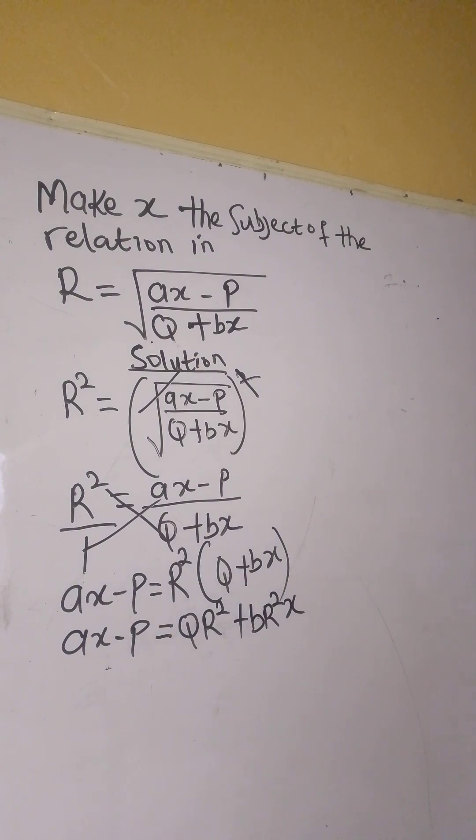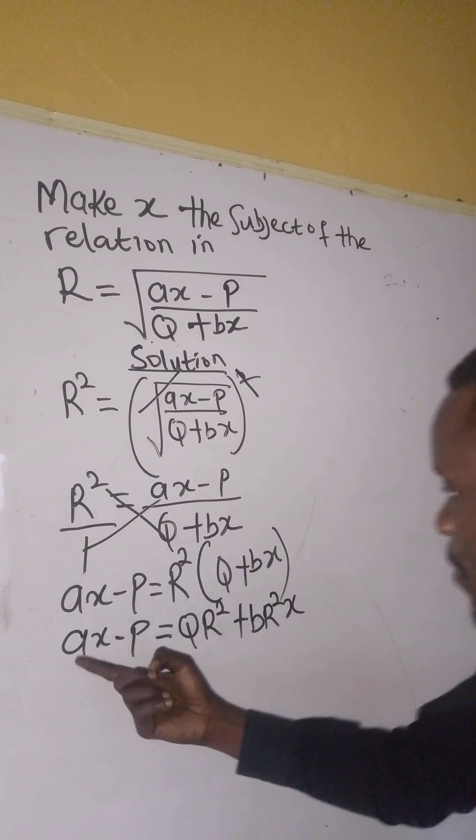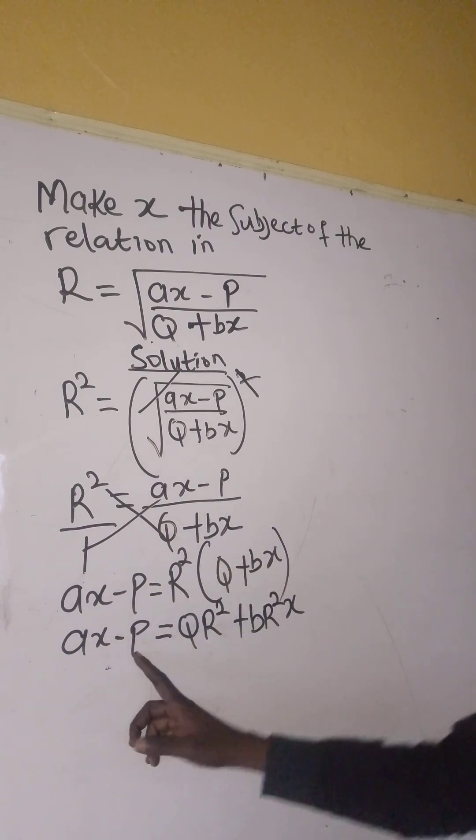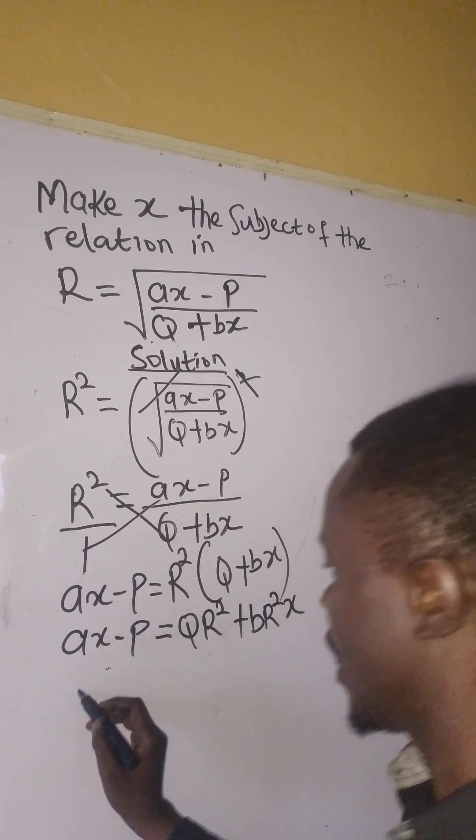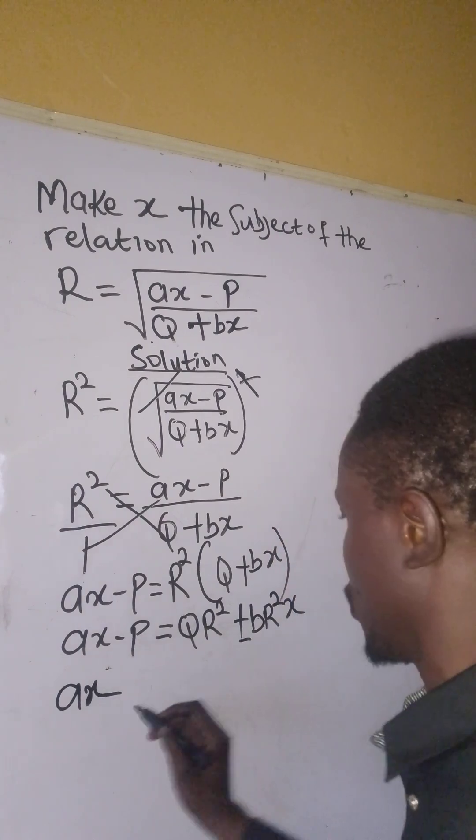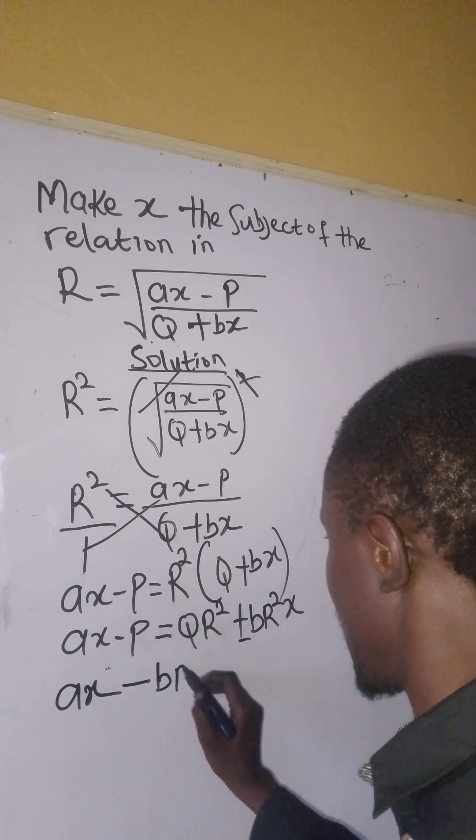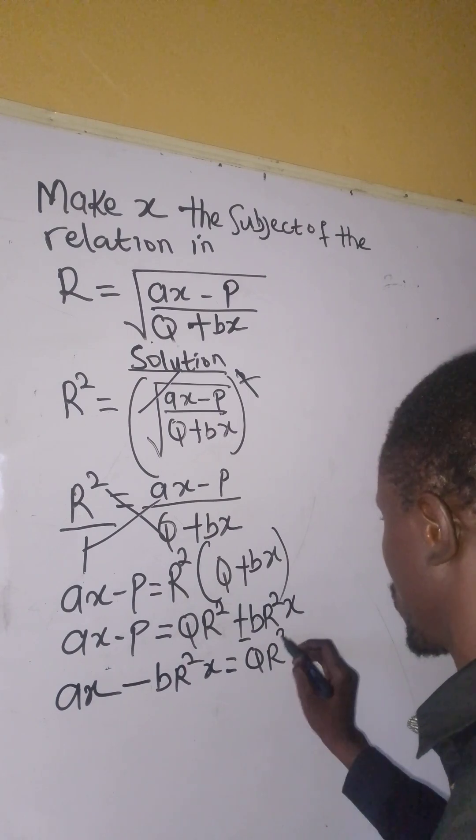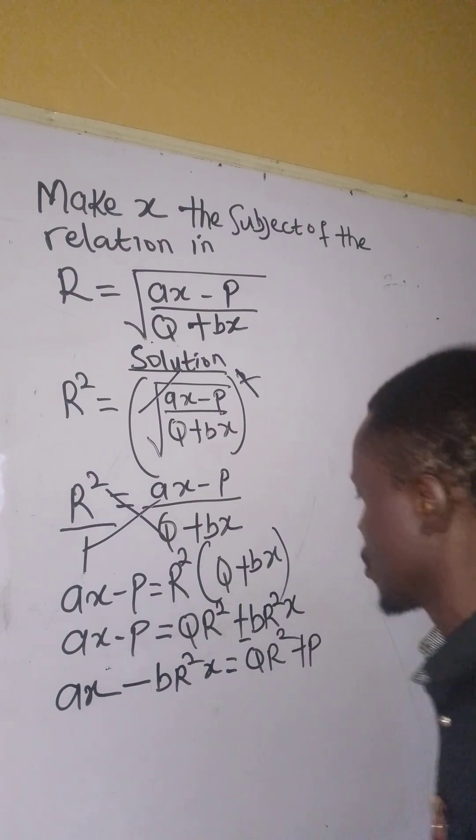Alright, so what can we do again? There is x here, there is x here. We have to take x to the other side so that q will come here. So we now have ax plus to minus br²x equals qr² plus b.